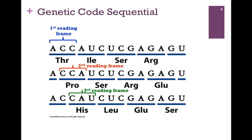The genetic code is read sequentially from the mRNA transcript. In the illustration here, our message begins with ACC and ends with AGU. If we begin with the first nucleotide in our transcript, our first codon is ACC, and because they're read in sequential order, that gives us a certain sequence of amino acids: threonine, isoleucine, serine, and arginine.